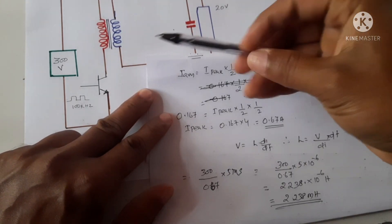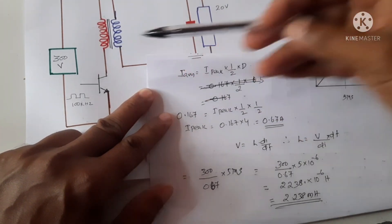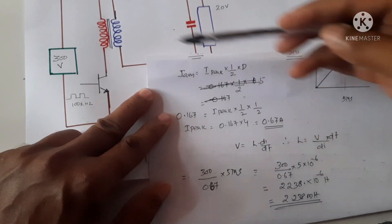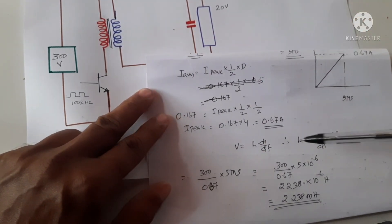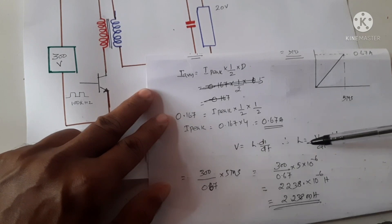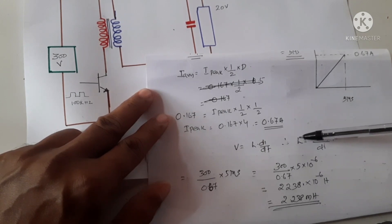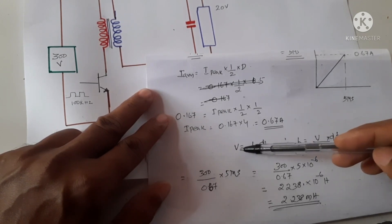Now we know that the voltage across the inductor is given by V equals inductance into di by dt. From this equation we can calculate the value of inductance, that will be L equals V divided by di into dt.